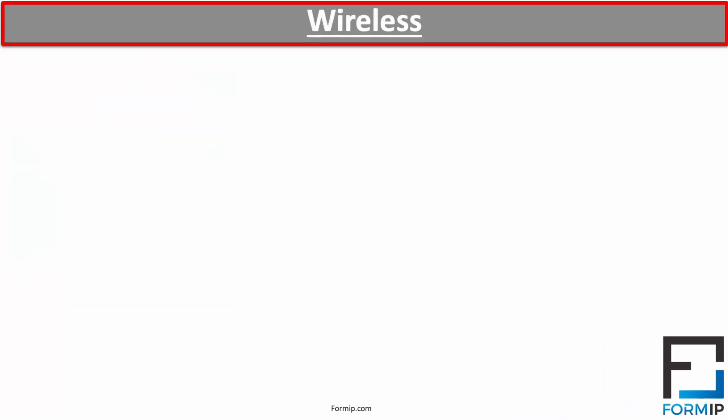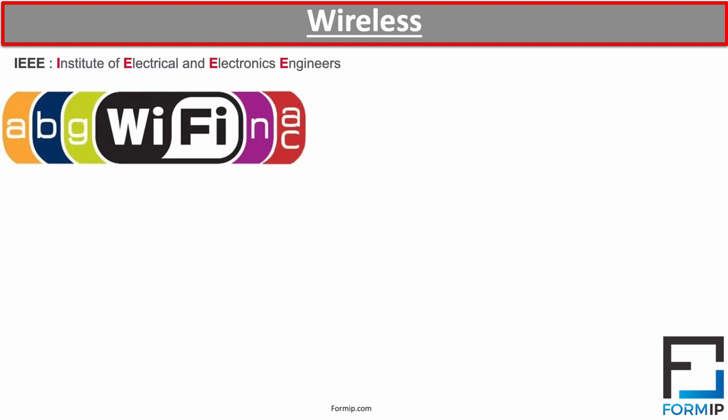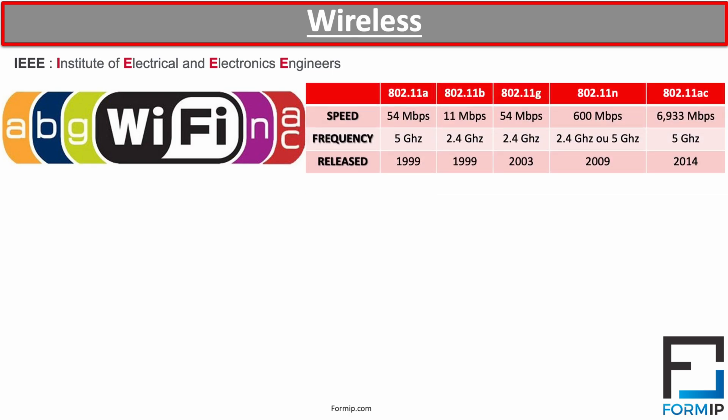The IEEE is an international organization for the advancement of low-current technologies, responsible for a set of standards called 802. The standard for wireless LANs — i.e., Wi-Fi — is 802.11. Wireless technology is becoming increasingly popular, and there are now five wireless standards: A, B, G, N, and AC. Here is a table that lists the speeds, frequencies, and release dates of the different Wi-Fi standards.